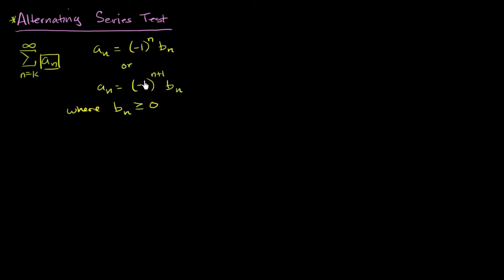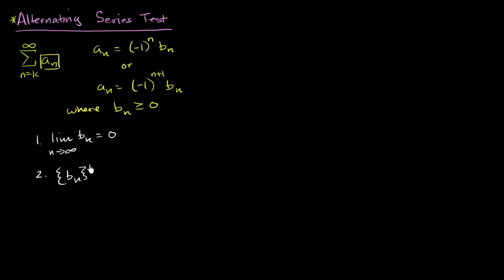If all of these things are true, and we know two more things: number one, the limit as n approaches infinity of b sub n is equal to zero, and number two, b sub n is a decreasing sequence — then that lets us know that the original infinite series is going to converge.